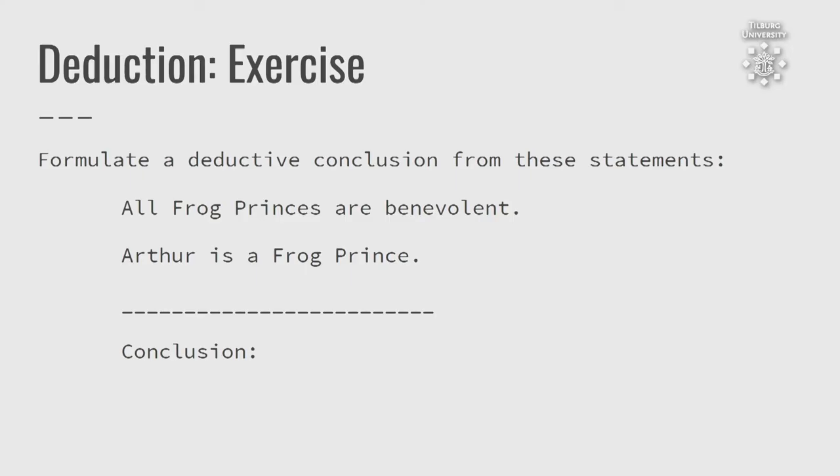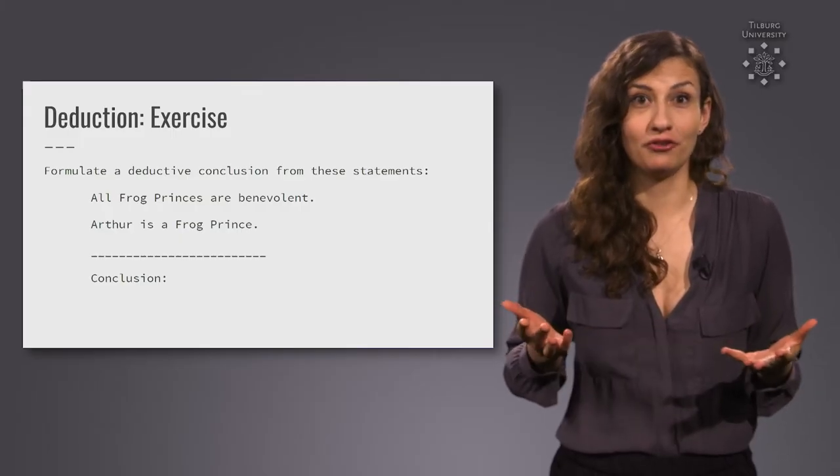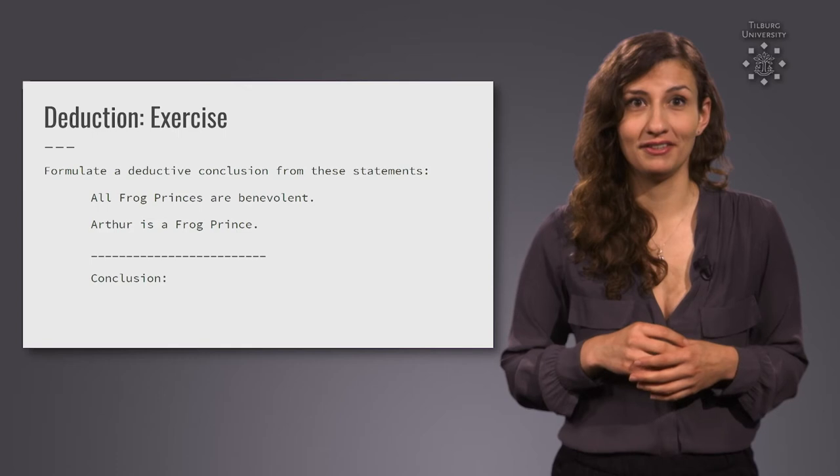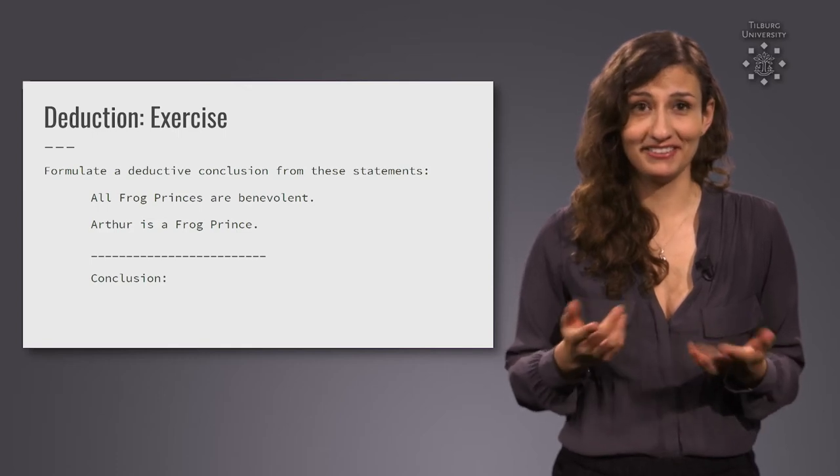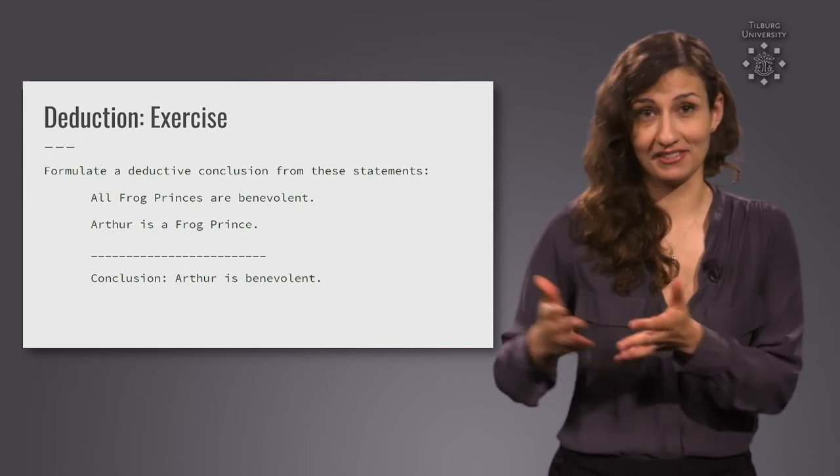Formulate a deductive conclusion from these two statements. All frog princes are benevolent. Arthur is a frog prince. What is the conclusion you can draw based on deduction? Have you got it? All right? Okay, so the conclusion would be that Arthur is benevolent.